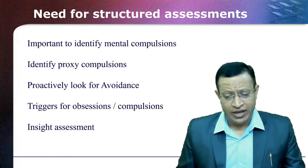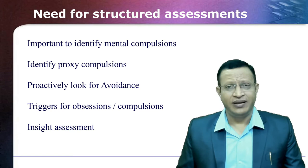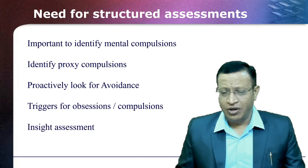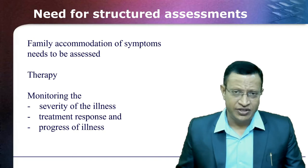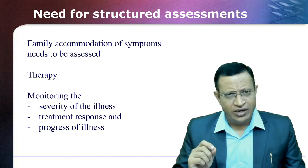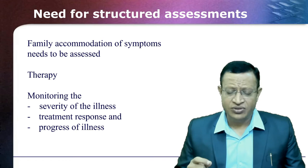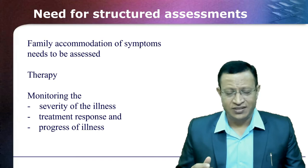We need to identify mental compulsions, because many patients may not volunteer information about them. We also need to check for proxy compulsions — family members may be doing compulsions on behalf of the patient. We look for avoidance: many patients avoid certain things because it will provoke anxiety. We need to look for triggers for obsessions and compulsions, as well as insight assessment. We need to know family accommodation — how the family is coping with OCD symptoms, since OCD affects the whole family. If doing therapy, competency assessment is a must, and monitoring of treatment response, severity, and progression of illness is essential.